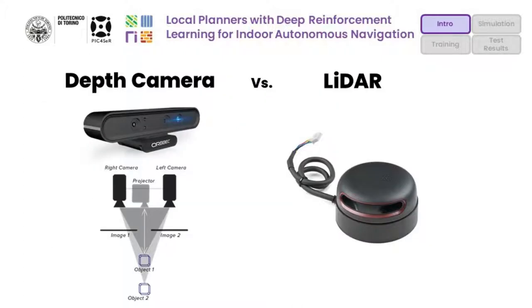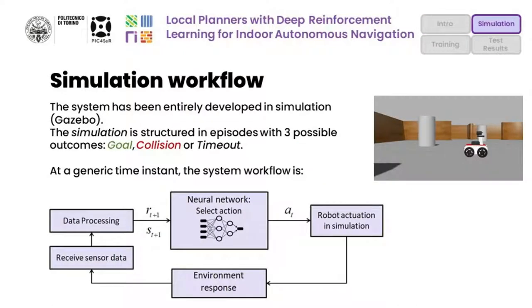In this work, we compare two different DRL navigation solutions that leverage depth camera and LiDAR information. The system has been entirely developed in simulation according to a reinforcement learning framework, structured in episodes with three possible outcomes.